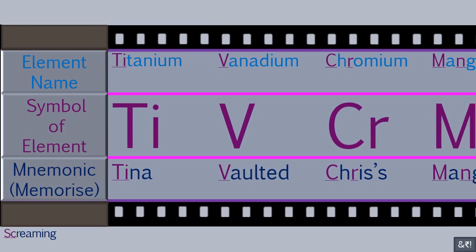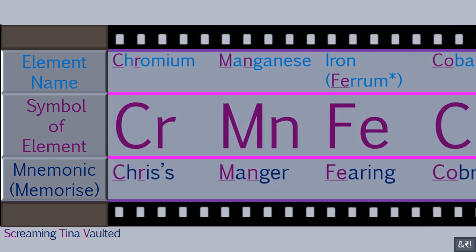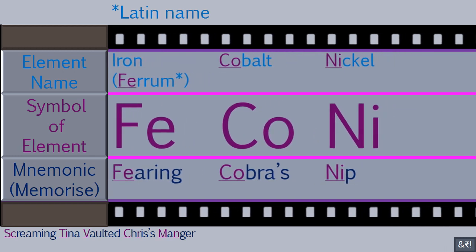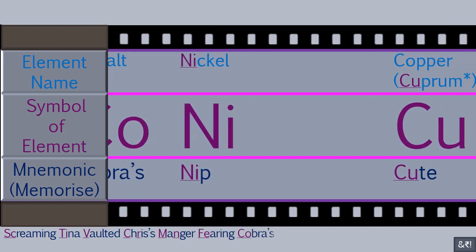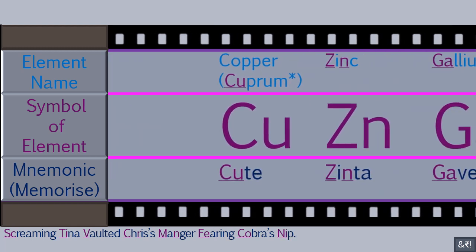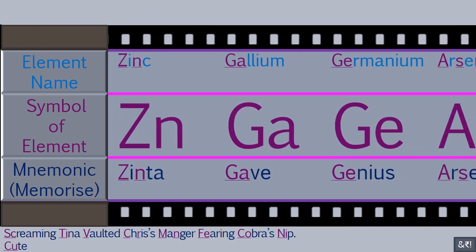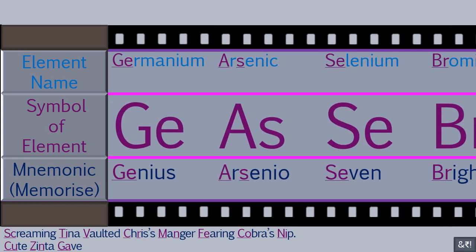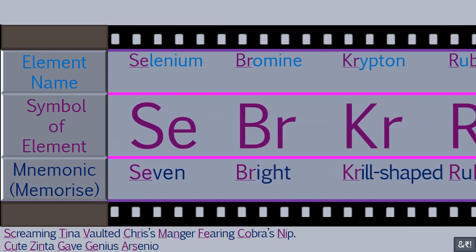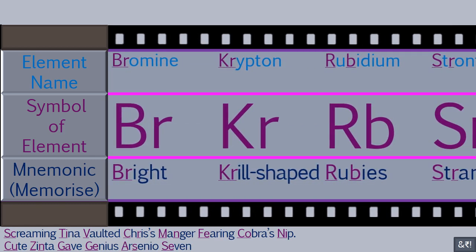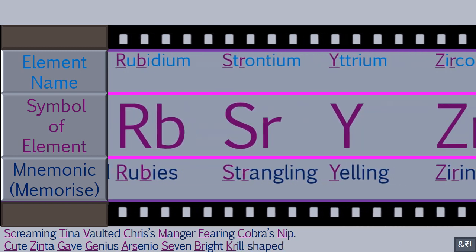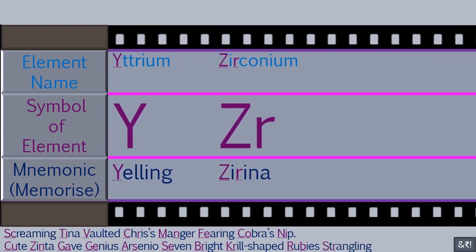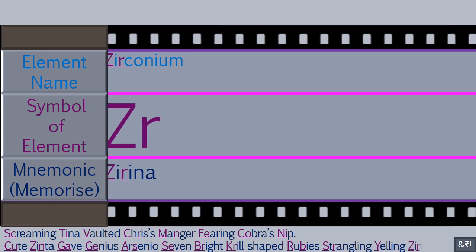Screaming Tina Vaulted Chris Manger Fearing Cobras Nip Cute Zinta Gave Genius Arsenio Seven Bright Krill-shaped Rubies Strangling Yelling Zirina.